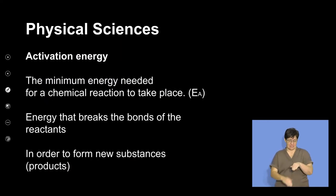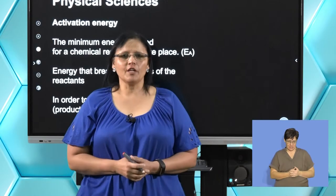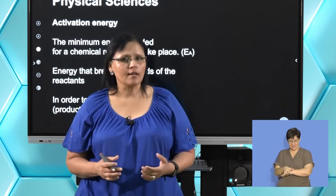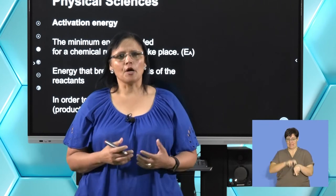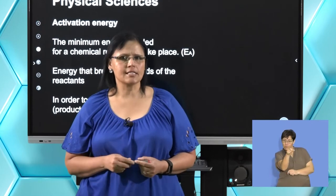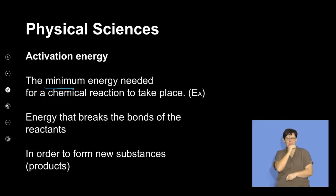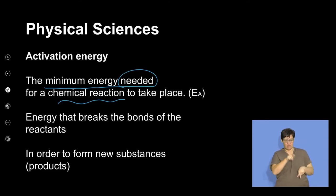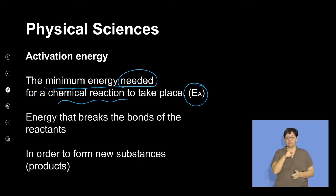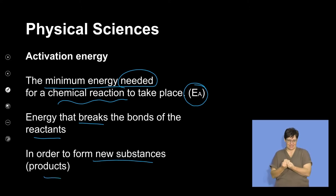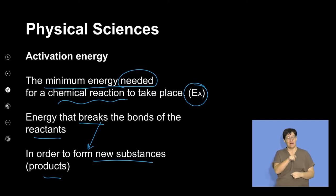For every reaction there is a specific activation energy at a specific temperature. The definition for activation energy is one of the key terms we need to understand. Activation energy is the minimum energy needed for a reaction to take place. We use the symbol E with subscript A. It is the energy that breaks the bonds of the reactants so they can form new substances or products. The bonds must first be broken for the reaction to proceed, and at that point we have sufficient activation energy.